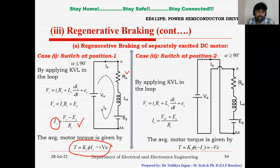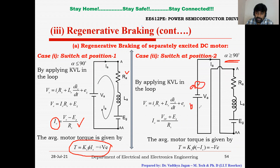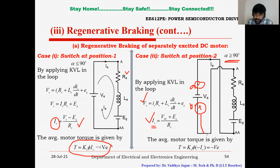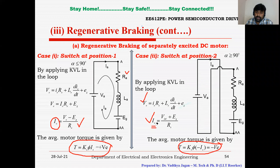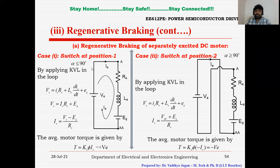When the DPDT switch is moved to position two and alpha is greater than 90 degrees, terminal A becomes negative and terminal B becomes positive. Applying KVL and finding the current, the armature current reverses direction. Since the current leaves from the positive terminal but the armature connection is reversed, you get negative torque — meaning the machine now operates in the second quadrant as a braking (generator) mode.